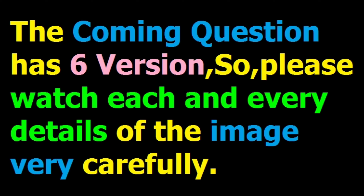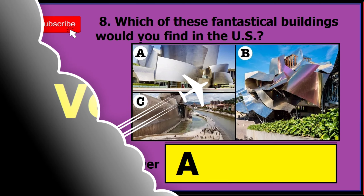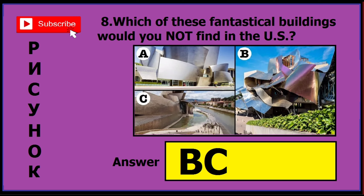This coming question has six versions, so please watch every detail of the image very carefully. In version one, the question asks 'which of these fantastical buildings will you find in the US?' — if you find this sort of image, the correct answer is A. In version two, the question asks which you will not find in the US, and the correct answer is BC.